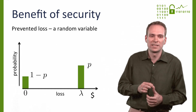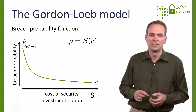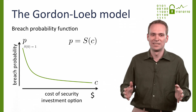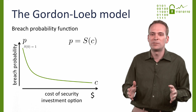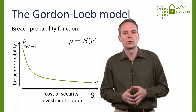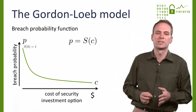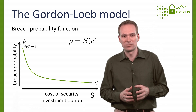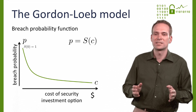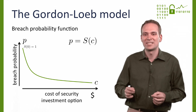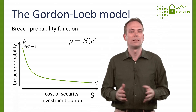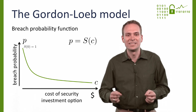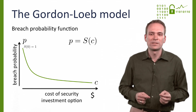Security investment changes the probability of a loss via a breach probability function S, which takes as argument the cost of a potential security investment C. Now we have the main ingredients for a simple form of the popular security investment model proposed by Larry Gordon and Marty Loeb in 2002. The Gordon and Loeb framework allows us to plug in custom functional forms for the breach probability function S. This would be useful if one could easily determine the shape of S for a given organization. Unfortunately, I am not aware of a single serious attempt to do so in practice. So by instantiating S, we add another assumption to the model. In the absence of better information, it is reasonable to assume decreasing marginal benefits of security spending. Every additional dollar spent on security reduces the probability of a loss less than the last one.